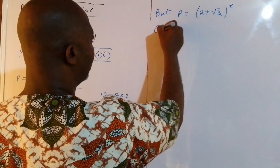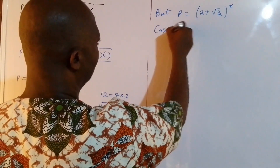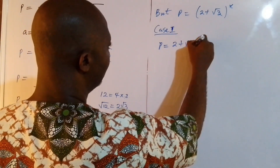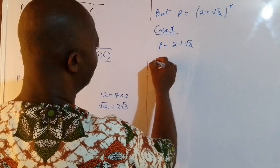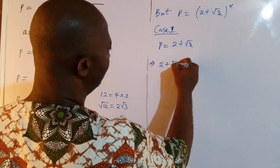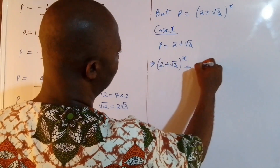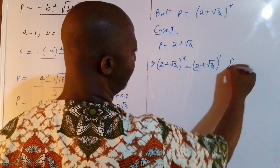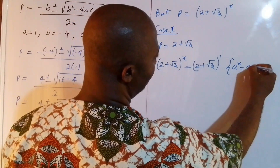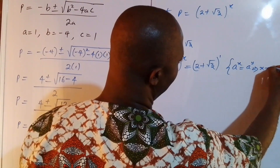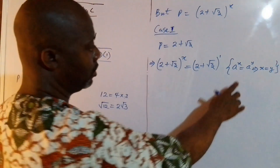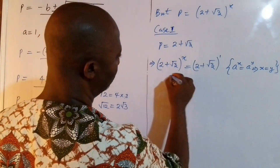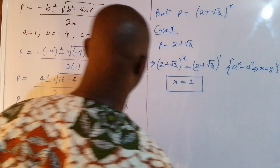For case one, t = 2 + √3. Since t = (2 + √3)^x, this means (2 + √3)^x = (2 + √3)^1. By the law of same bases, if a^x = a^y then x = y, so the powers are equal. Therefore x = 1. This is the value of x for case one.